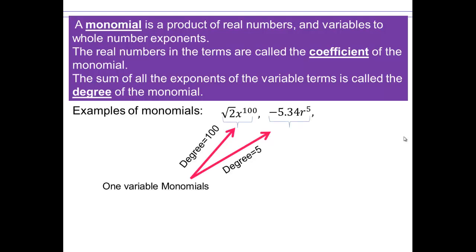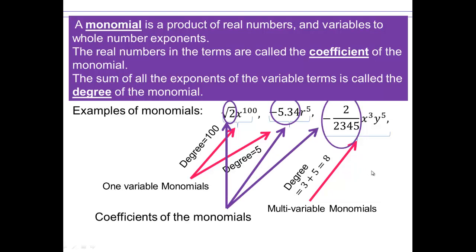So let's take some examples. Here we have square root 2x to the 100. So the degree of that monomial is 100. The degree of this monomial is 5 because that's the power of exponent. If you have a term with multiple variables, then to compute its degree, you look at all the exponents involved on the variables and take their sum. So here the degree of this monomial is going to be 8 because 3 plus 5. Those terms that you see, square root of 2, negative 5.34, negative 2 over 2345 are all coefficients of the monomial.